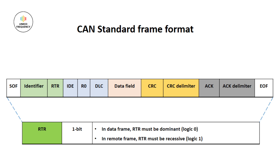Next is RTR — Remote Transmission Request Bit — which is 1 bit. If it's a data frame, then RTR is dominant, i.e. logic 0. If it's a remote frame, then the RTR value is recessive, i.e. logic 1. If we are transmitting both a data frame and a remote frame, the data frame will be transmitted first because the RTR value is 0, which is of higher priority.